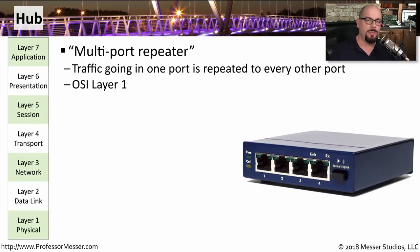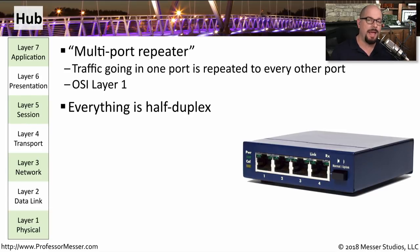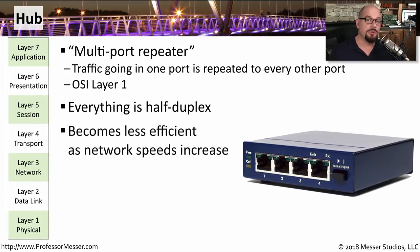Since there are no forwarding decisions to be made inside of a hub, we often say that this is a device operating at OSI Layer 1. Because all devices are effectively sharing this network, you can't have a full duplex connection. All devices connected to a hub run at half duplex by default. If more devices begin communicating more often, there will be an increasing number of collisions, meaning the more traffic increases, the less efficient the network will be.